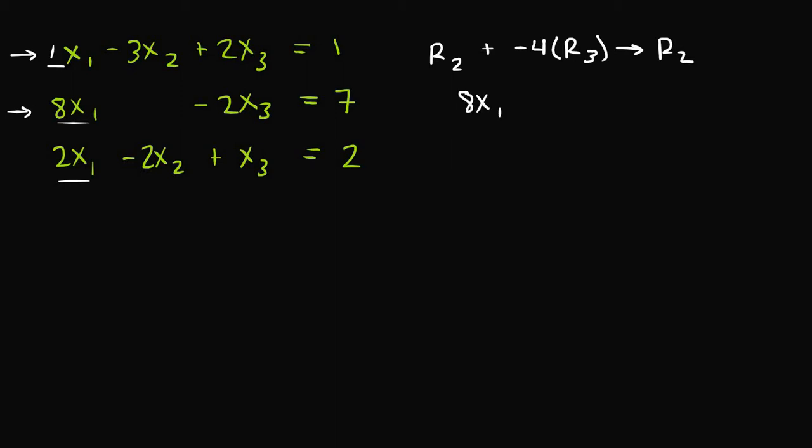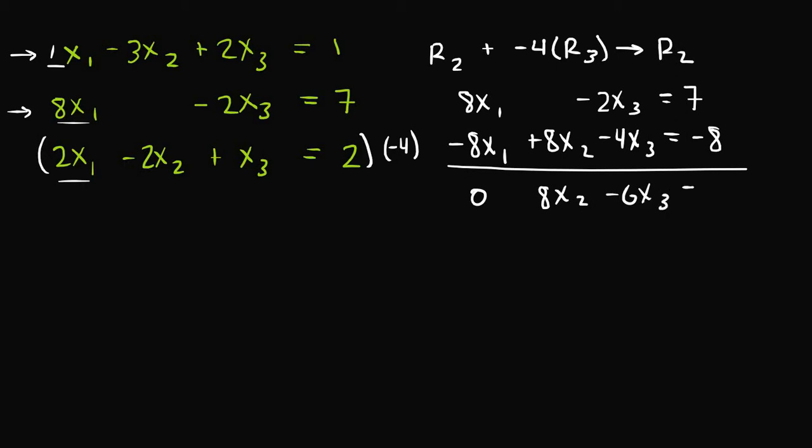is 8x1 minus 2x3 is equal to 7. And if I took equation 3 and I multiplied it by negative 4, I would get negative 8x1 plus 8x2 minus 4x3 is equal to negative 8. And then if I added these two equations together, well, I would get 0 for this first term, a positive 8x2, and then negative 2x3 minus 4x3 is negative 6x3. And that's equal to 7 minus 8 is negative 1.